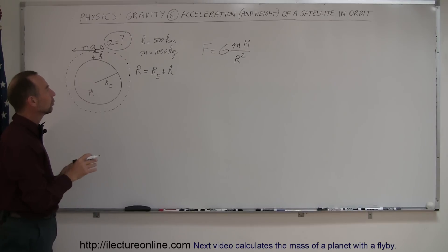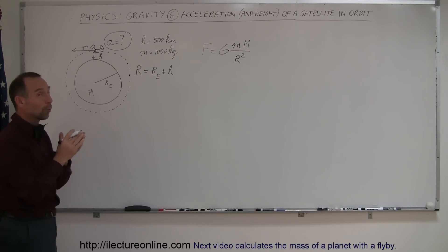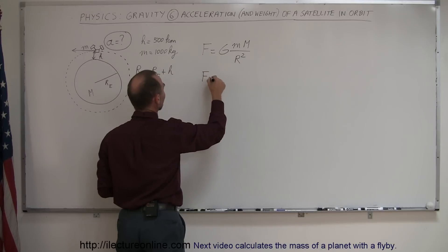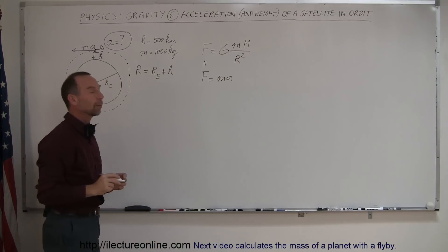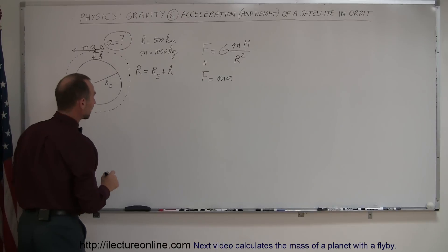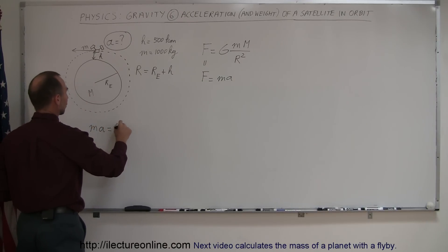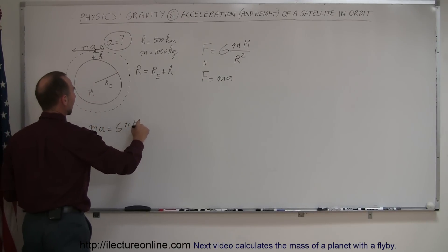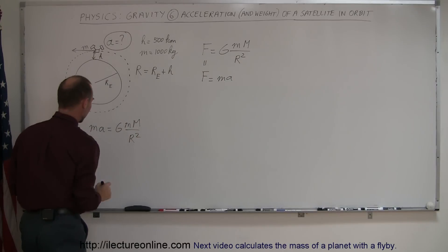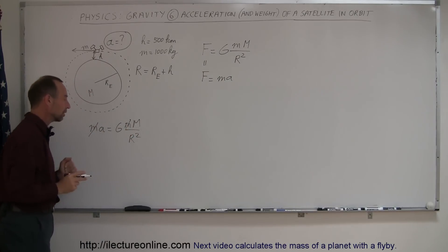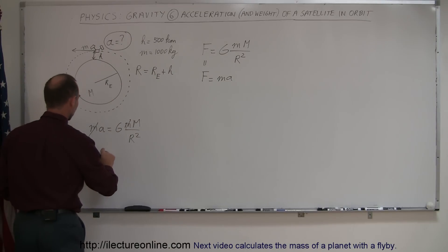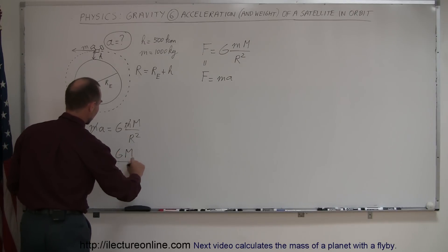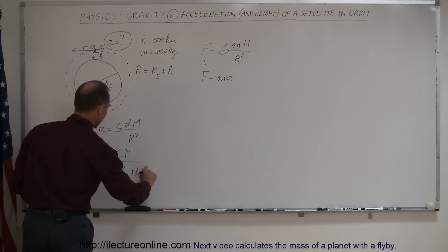That force equals the weight of the satellite, so F equals MA. Setting these two equal to each other, MA equals G times M times big M over R squared. We can cancel the satellite's mass M, and for R we plug in the radius of the Earth plus H. So the acceleration equals G times the mass of the Earth divided by the quantity (radius of the Earth plus height of the orbit) squared.